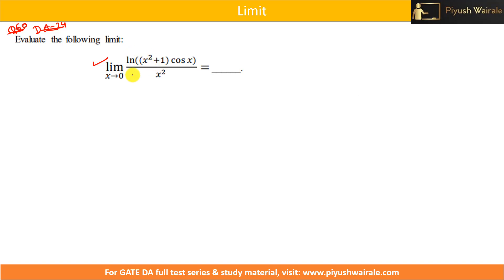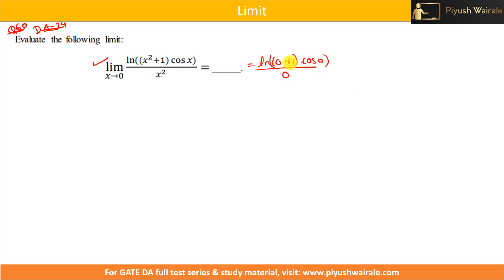Whenever you get such a question to find the limit, you generally try to put the limit first — that is, x equals 0. If you put x = 0, you get ln(0 + 1)·cos(0) in the numerator. cos(0) is 1, 0 + 1 is 1, so 1·1 = 1, and ln(1) = 0. The denominator is x² = 0. So this limit is in the 0/0 form.